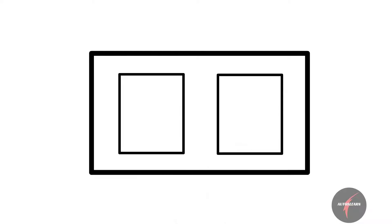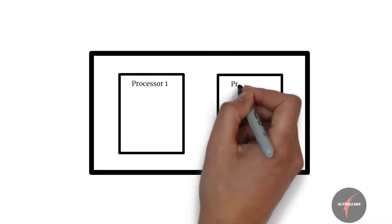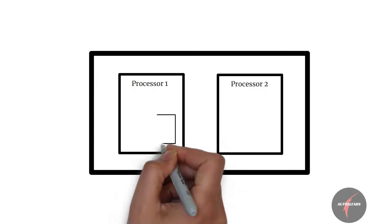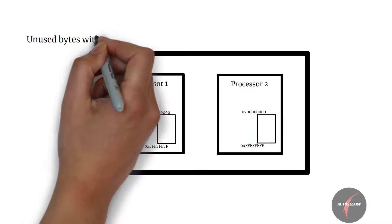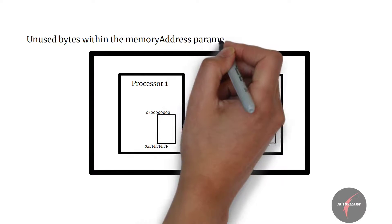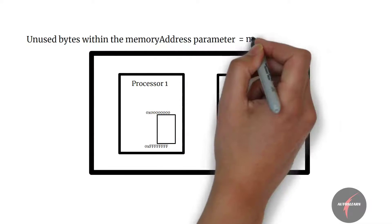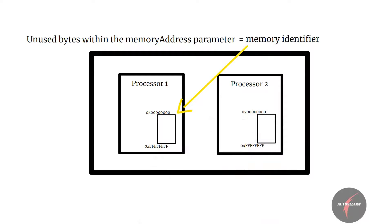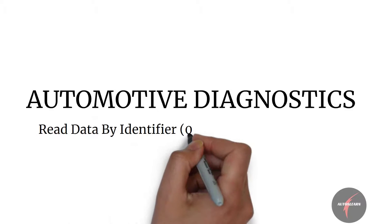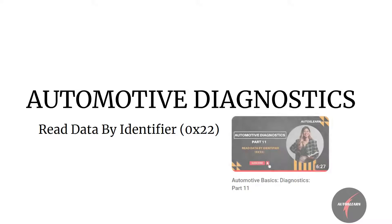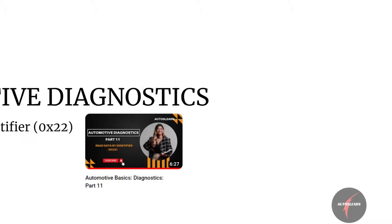For example, in case a dual processor server is used in the network which contains separate memory storage for each processor with the same address range, then to access a memory address in a specific processor, the unused bytes within the memory address parameter can be used by defining it as memory identifiers. In the last video, we had a look into details of Read Data by Identifier (0x22) service. Let's have a look into the next diagnostic service.